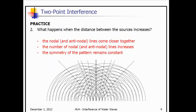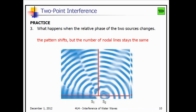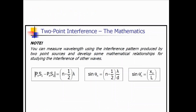What if we move those two source points closer to each other? If they're really close to each other, the same sort of thing happens — the nodal and anti-nodal lines come closer together. We see more nodal and anti-nodal lines, but the symmetry of the pattern is constant. If we change the phase of one of the sources, we end up seeing a shift in the pattern. The number of nodal lines will be the same, but the pattern will look different — it's no longer symmetric in the same way.